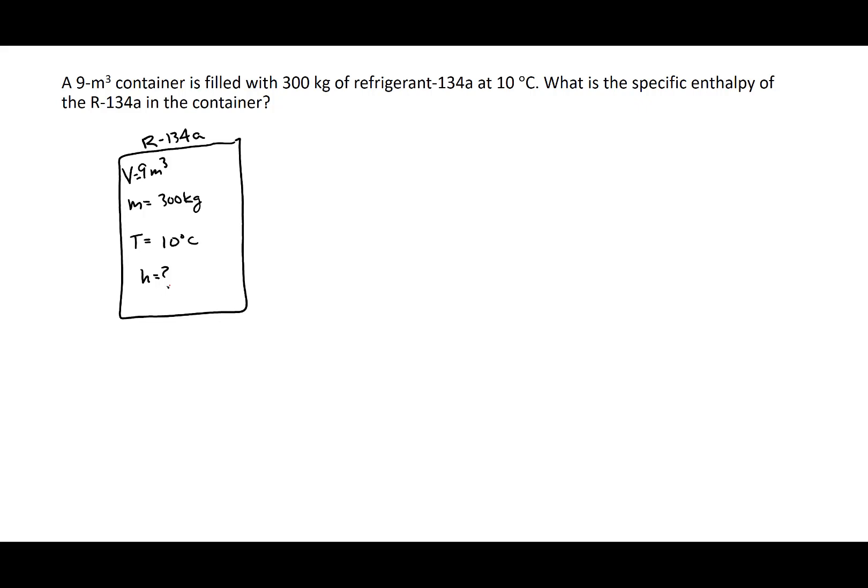In order to do this, we first need to figure out what our phase is — is this a compressed liquid, a saturated mixture, or a superheated vapor? We weren't given the pressure, so we can't just look at the temperature and pressure. But we were given the temperature, and we have the information needed to calculate the specific volume. So if we know the temperature and the specific volume, we can determine what the phase is.